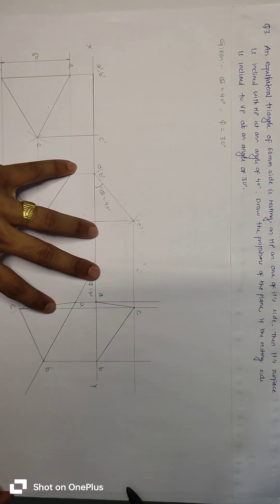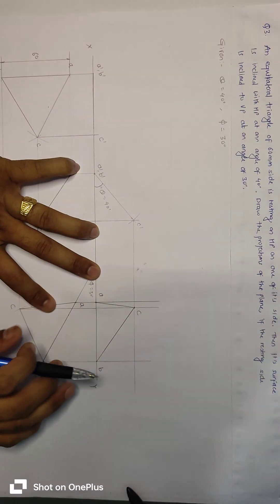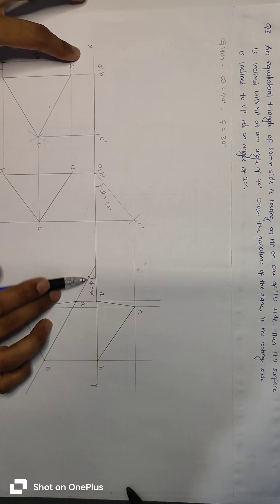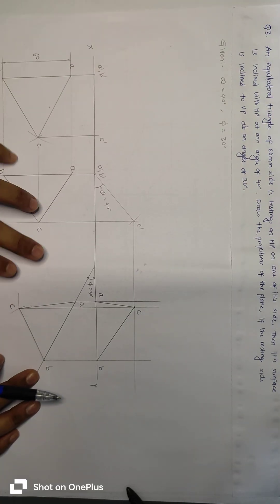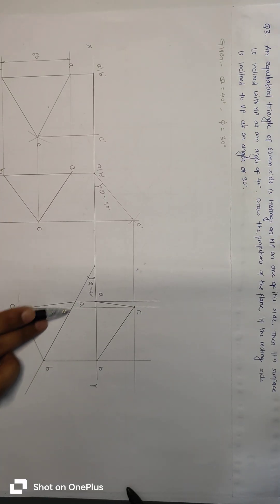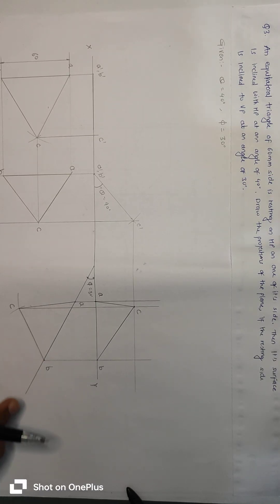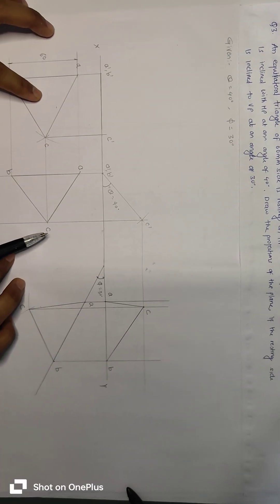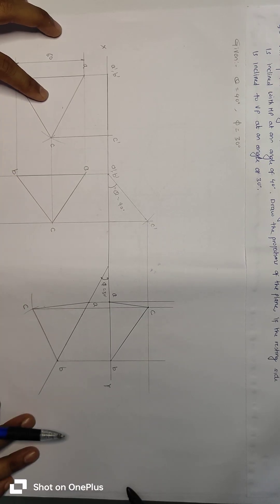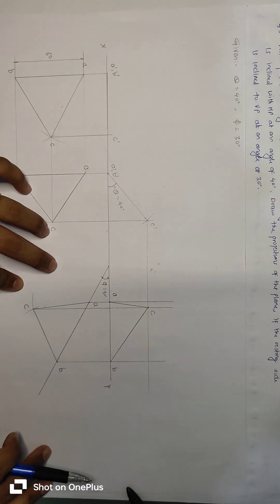In this question, angle phi is given and we have to take angle phi. In stage 3, we have to take angle phi as it is. So we have drawn a reference line of 30 degrees and pasted this top view from stage 2 on this reference line, then drawn the front view.